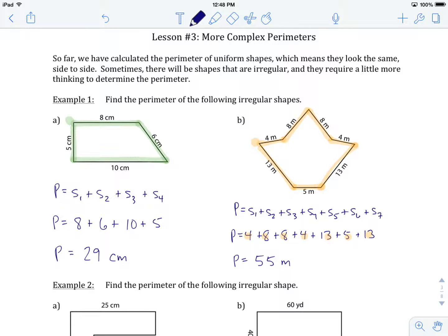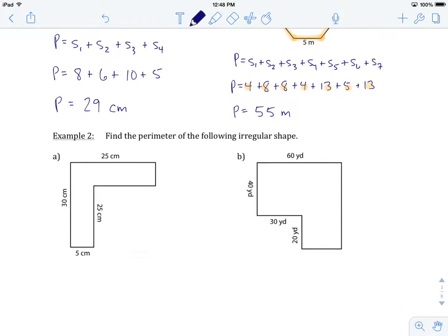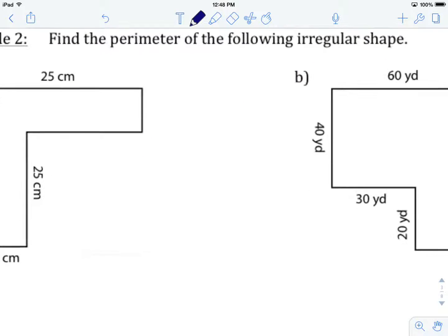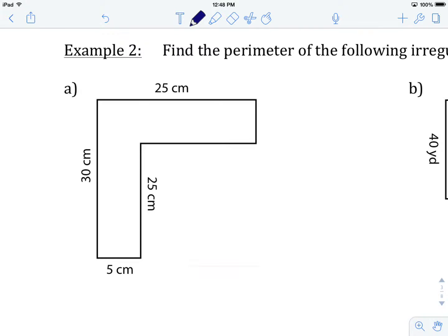So these are one type of perimeter that we're going to be looking at. The second in example two, these are perimeters where we need to do a little bit of work. We need to find some of the lengths. So if we look at this L-shaped piece here in A, again, we're tasked with finding the perimeter.